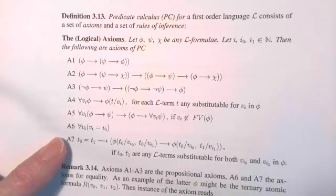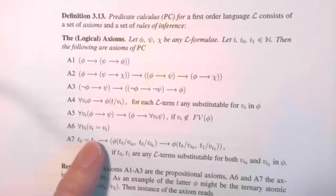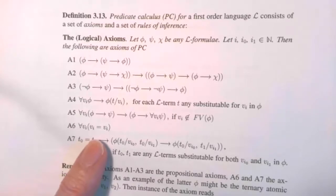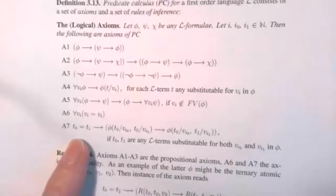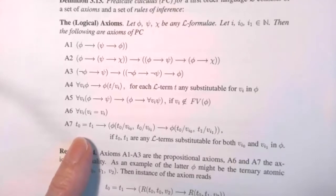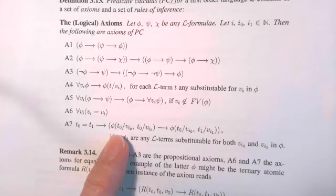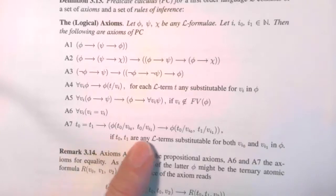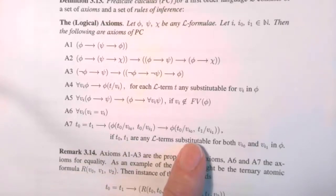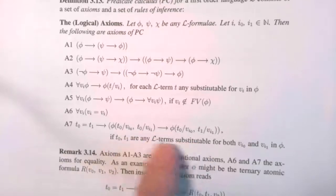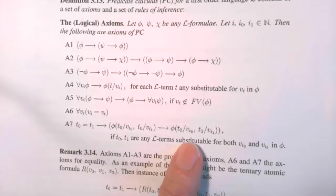A5 is saying if I quantify over an implication, if the quantified variable isn't one of the free variables of phi, then I can say this is a conclusion that phi arrow for all vi psi. It's a sort of distributive law of a strange kind when vi is not a free variable of phi. The last two relate to equality. The first here, A6, is the equation that everything equals itself.